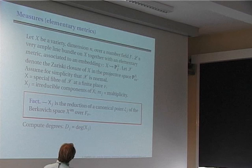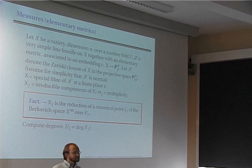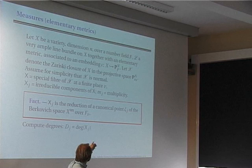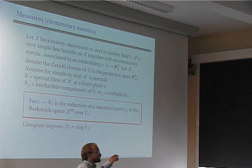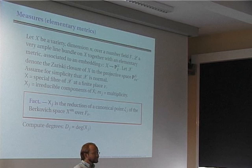The special fiber in general may have many irreducible components X_j with some multiplicities m_j. One fact implied by normality is that each X_j is the reduction of a canonical point ξ_j on the Berkovich space — ξ_j reduces to the generic point of the variety X_j.